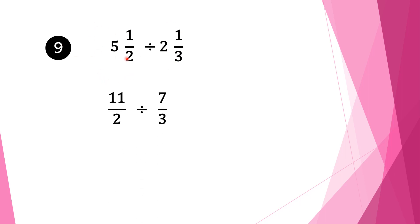Moving on to question 9. We have 5 and a half divided by 2 and 1 third. Again we convert our mixed fractions into normal fractions. So 2 times 5 is 10, plus 1 is 11, and we bring our denominator 2 as it is. We bring the division sign as it is. For the second fraction: 3 times 2 is 6, plus 1 is 7, and we bring our denominator 3 as it is.